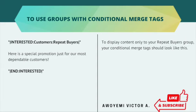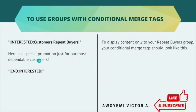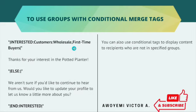Let's take another example for repeat buyers. We create a conditional statement: *|IF:INTERESTS:customers=repeat buyers|* — for our repeat buyers we send them: 'Here is a special promotion just for our most dependable customers,' then we end the statement. This message will be sent only to customers who are repeat buyers on our Fradia Store.